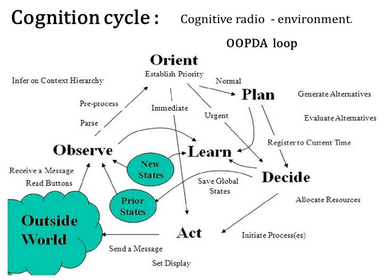The observe, orient, plan, decide, act — that is the OOPDA loop — is a primary cycle, also called the OODA loop. Here, planning, learning, and sensing the outside world are crucial phases necessary to be properly prepared for the OODA loop.